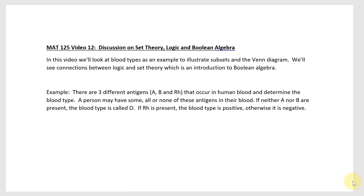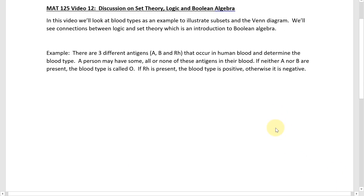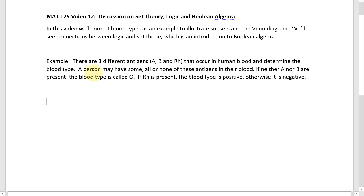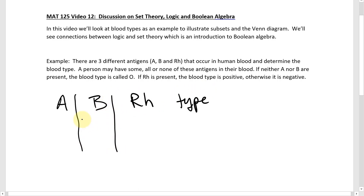We can illustrate the fact that there are eight different blood types using a truth table. We'll make columns for each of the different antigens: A, B, and RH, then write down what the type is. There have to be eight possibilities, because there are two possibilities with A, two with B, and two with RH — so two times two times two equals eight possibilities total.